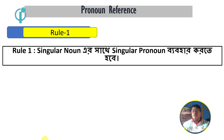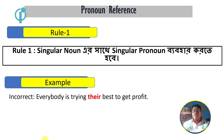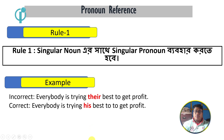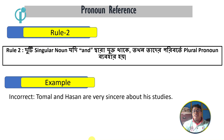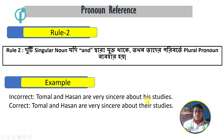Now we know that we have rules. We have to know that a singular noun takes a singular pronoun. For example: 'Everybody is trying their best' should be corrected to 'Everybody is trying his best,' because 'everybody' is singular, not plural. Similarly, 'Tomal and Hassan are very sincere about his studies' is still confused — it should not be 'his studies' for a plural subject.